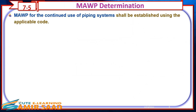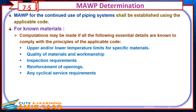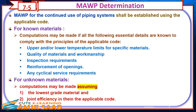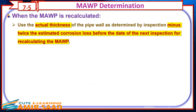Maximum Allowable Working Pressure (MAWP) Determination. MAWP for the continued use of piping systems shall be established using the applicable code. For known materials, computations may be made if all the following essential details are known: upper and/or lower temperature limits for specific materials, quality of materials and workmanship, inspection requirements, reinforcement of openings, and any cyclical service requirements. For unknown materials, computations may be made assuming the lowest grade material and joint efficiency within the applicable code. When the MAWP is recalculated, use the actual thickness of the pipe wall as determined by inspection minus twice the estimated corrosion loss before the date of the next inspection.